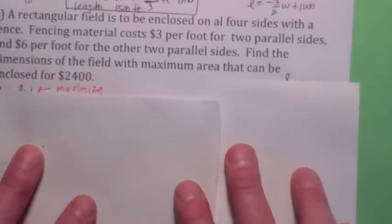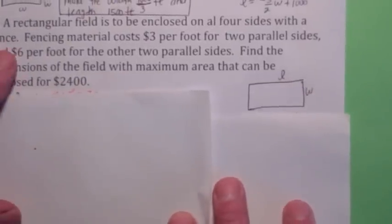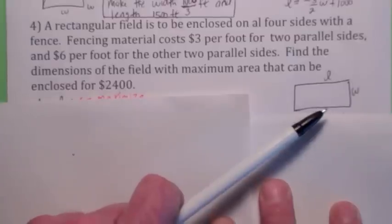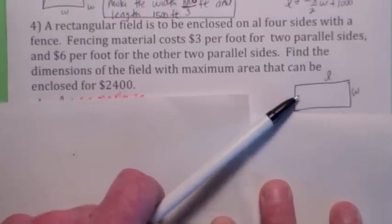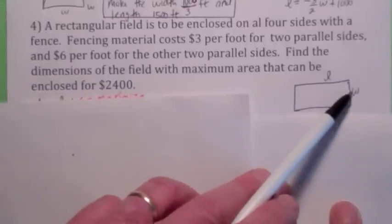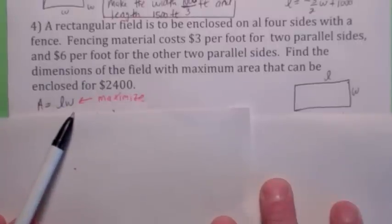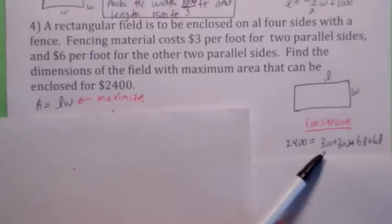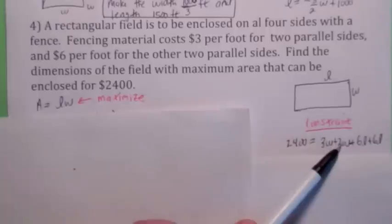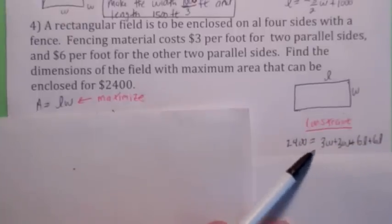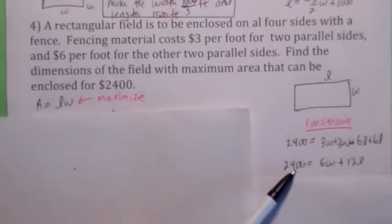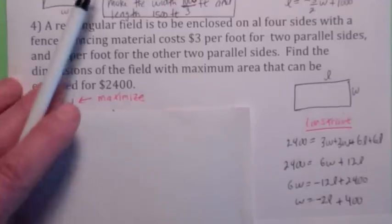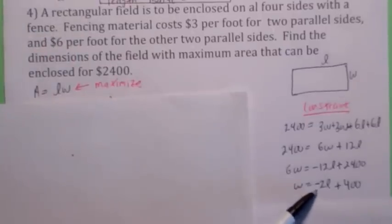Here's another one with a twist. You have a rectangular field where two of the sides cost $3 per foot and the other two parallel sides cost $6 per foot. You still want to find the maximum area, but the constraint equation looks a little different — here you have a total of $2,400 to spend. So the constraint is 6w plus 12l equals 2,400. I'm going to solve this for w this time — you don't always have to solve for l. Solving gives w equals negative 2l plus 400. Then march back to the area function to write area as a function of length. The domain is 0 to 200 for l.